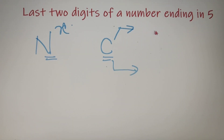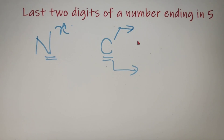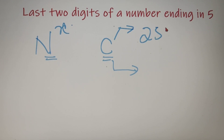Now there can be two possible cases: when c is even and when c is odd. So first let's find out what will be the case when c is even. If the second last digit of the number is even, then the number will always end in 25.